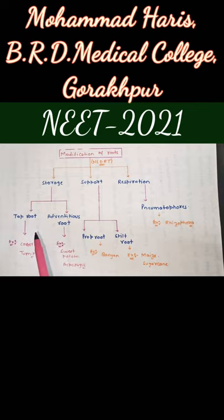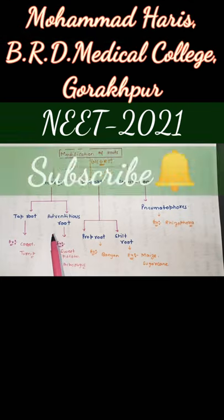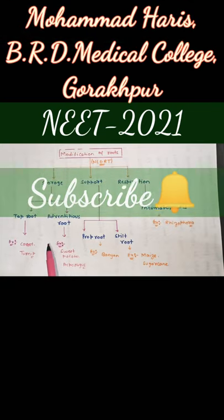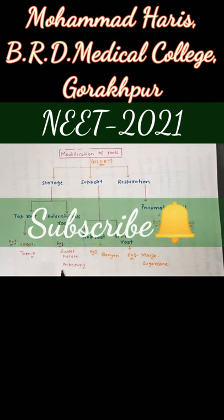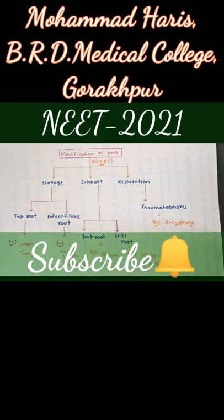Examples of Tap Roots: Carrot and Turnip. Examples of Adventitious Roots: Sweet Potato and Asparagus.